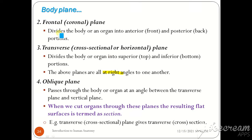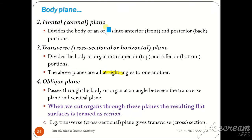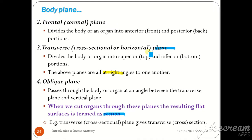To recap, we have seen different types of planes: the sagittal plane, mid-sagittal plane, the frontal plane, the transverse plane, and the oblique plane. When we work through these planes, the resulting flat surfaces are termed sections. So the transverse or cross-sectional plane gives a transverse or cross-sectional section, and the frontal plane gives a frontal section.